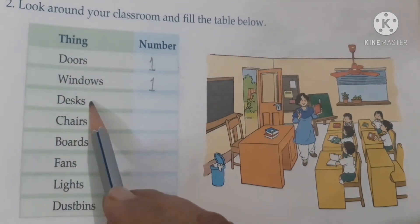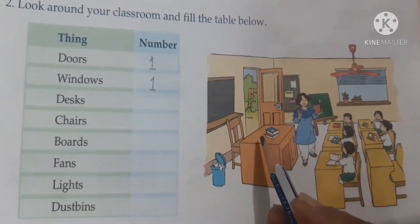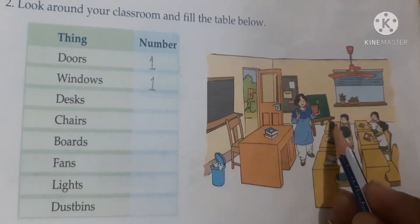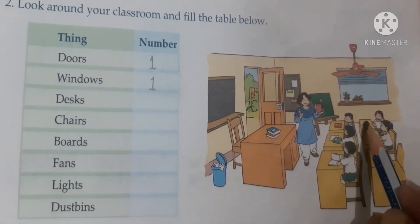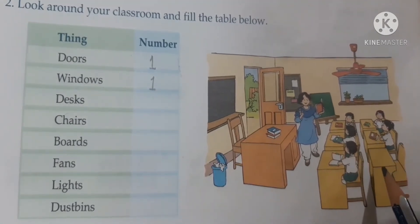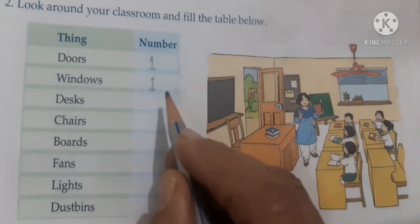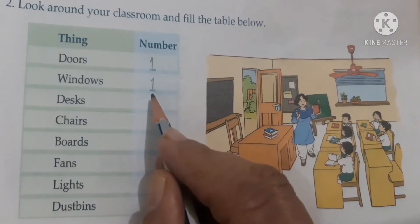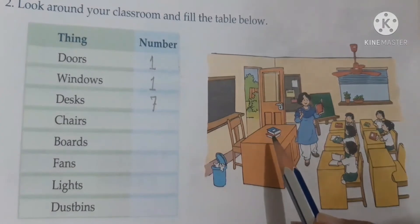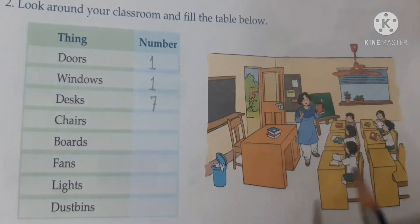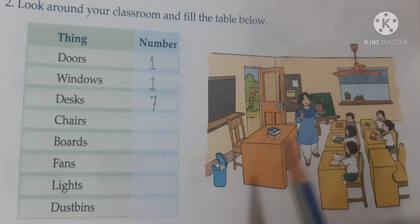Third — desks. Let's count: 1, 2, 3, 4, 5, 6, 7. The number of desks is 7. Fourth — chairs. How many chairs are in the classroom? 1, 2, 3, 4, 5, 6, 7 — there are 7 chairs.